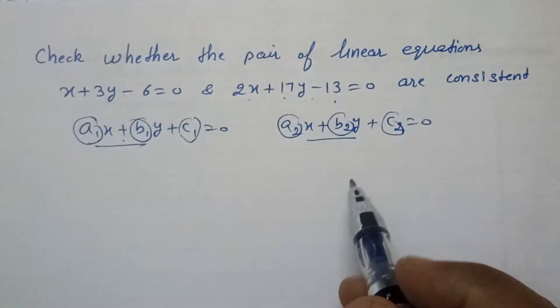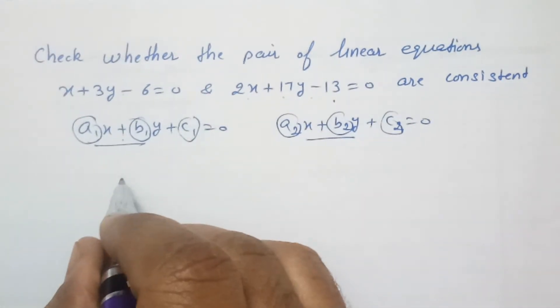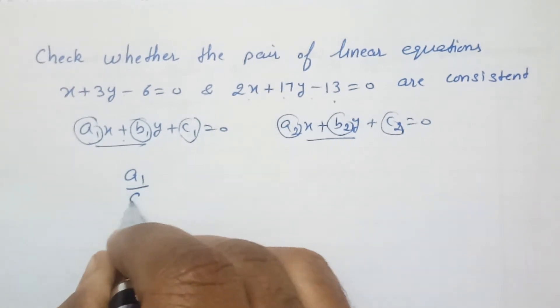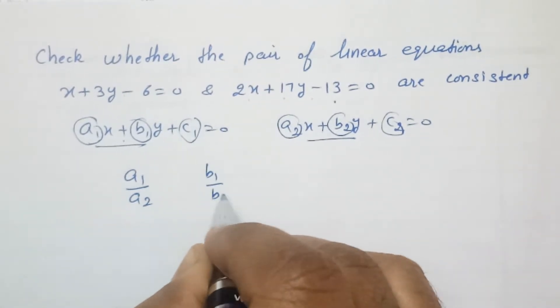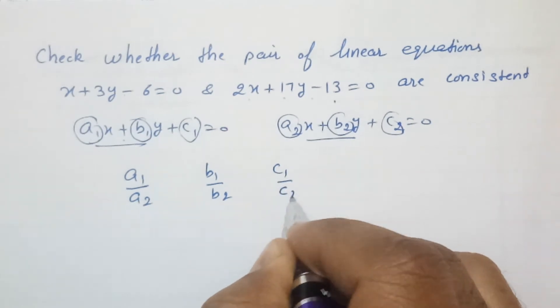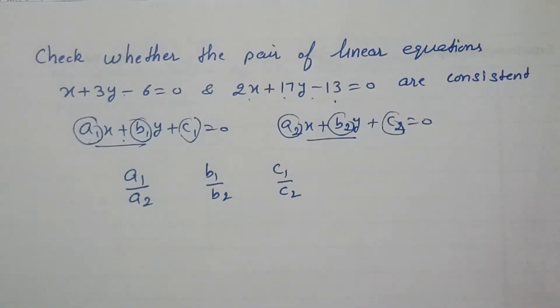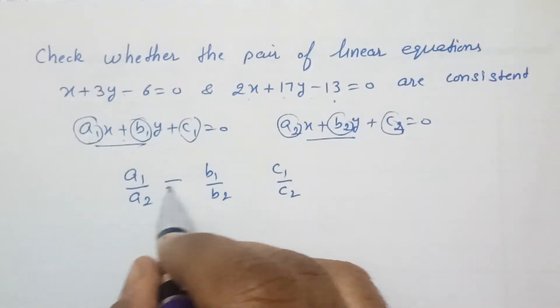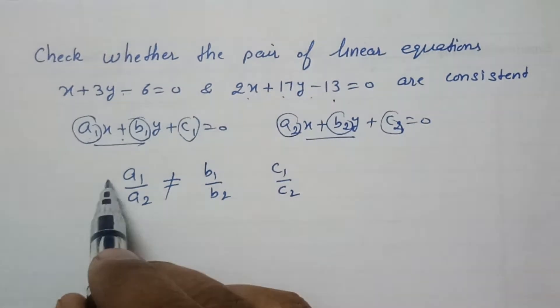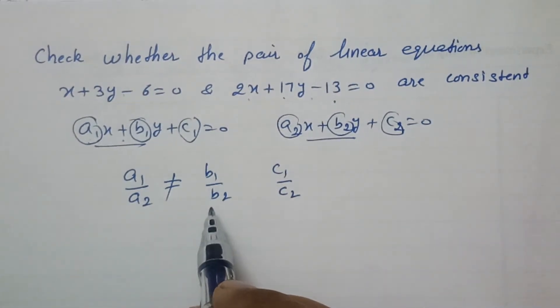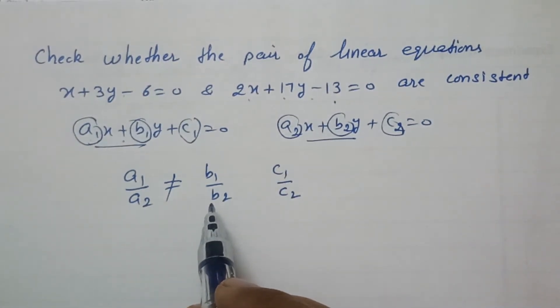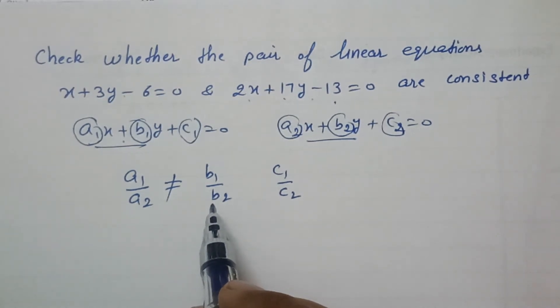So, for consistency, we should have a condition that involves the ratio of a1 over a2, b1 over b2, and c1 over c2. The first condition is that if the ratio of these two should not be equal, then the lines are consistent and they have a unique solution.